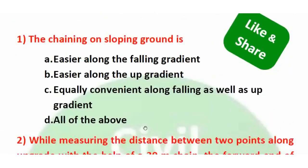Practice question: Chaining on sloping ground is easier along the falling gradient. The correct answer is A — easier along the falling gradient, meaning downhill chaining is easier because it is along the lower level.